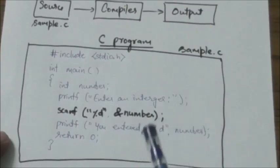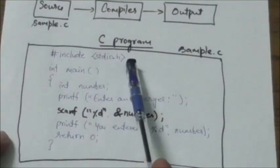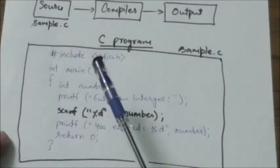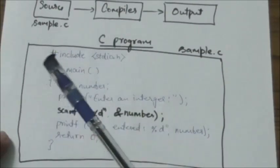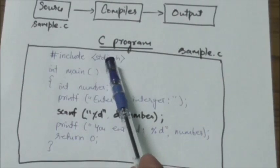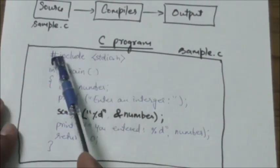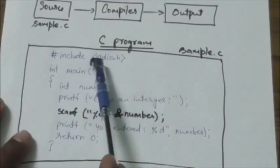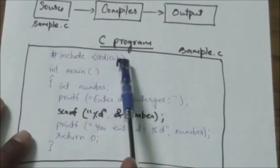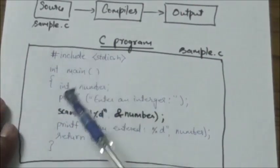C is a very small language and cannot do anything without the use of external libraries. So you need to tell the compiler what external code to use by including header files for the relevant libraries. Here you can see that in this line we have included the header file stdio.h.